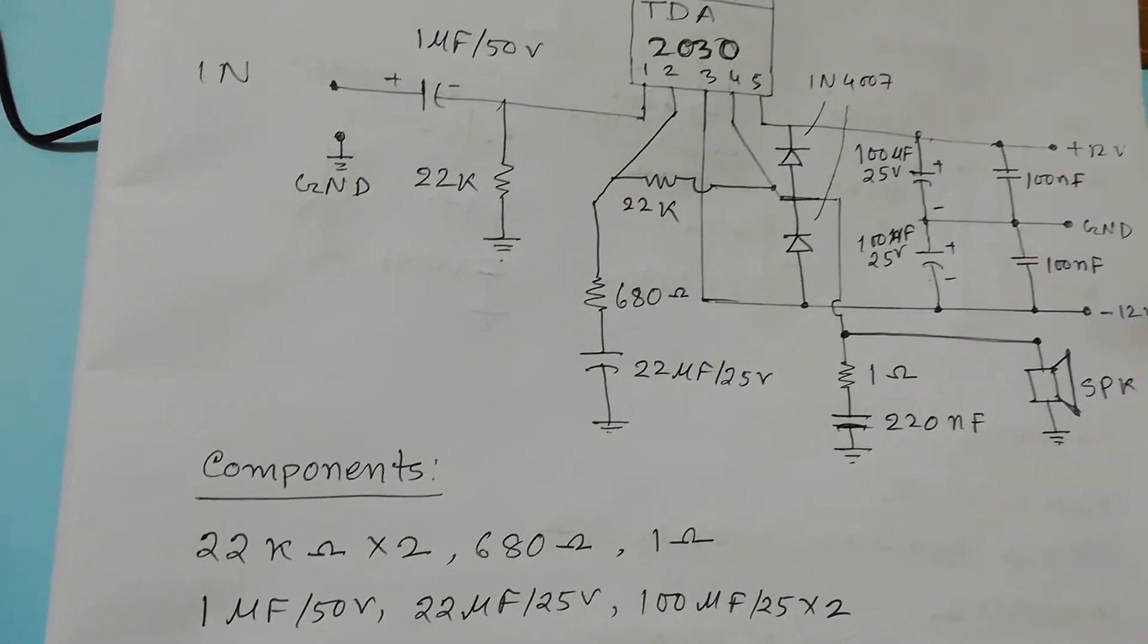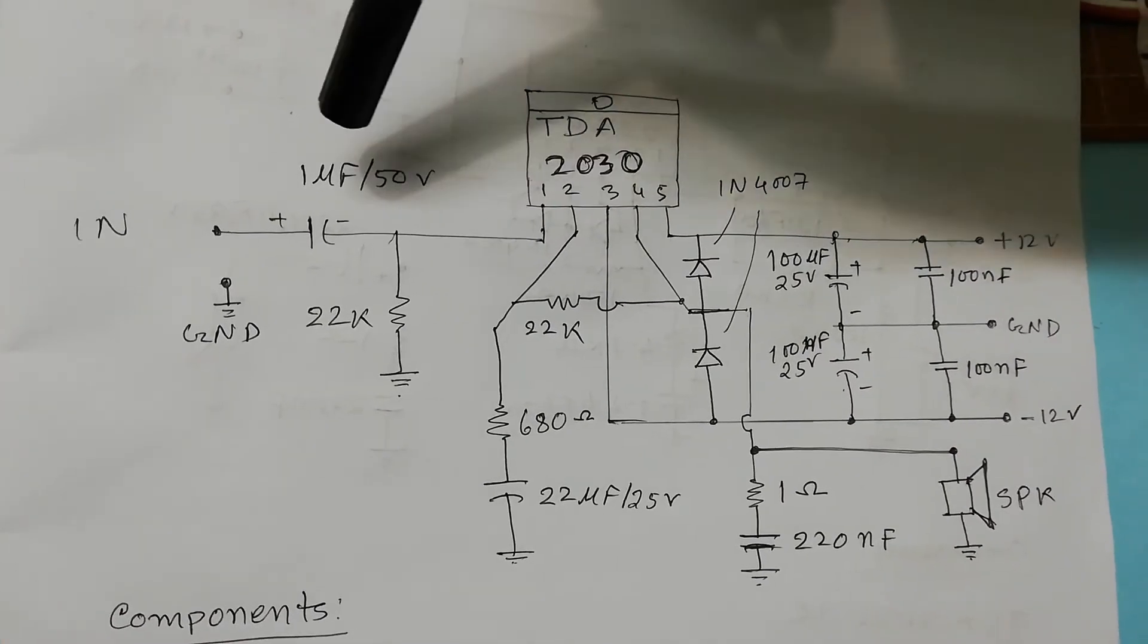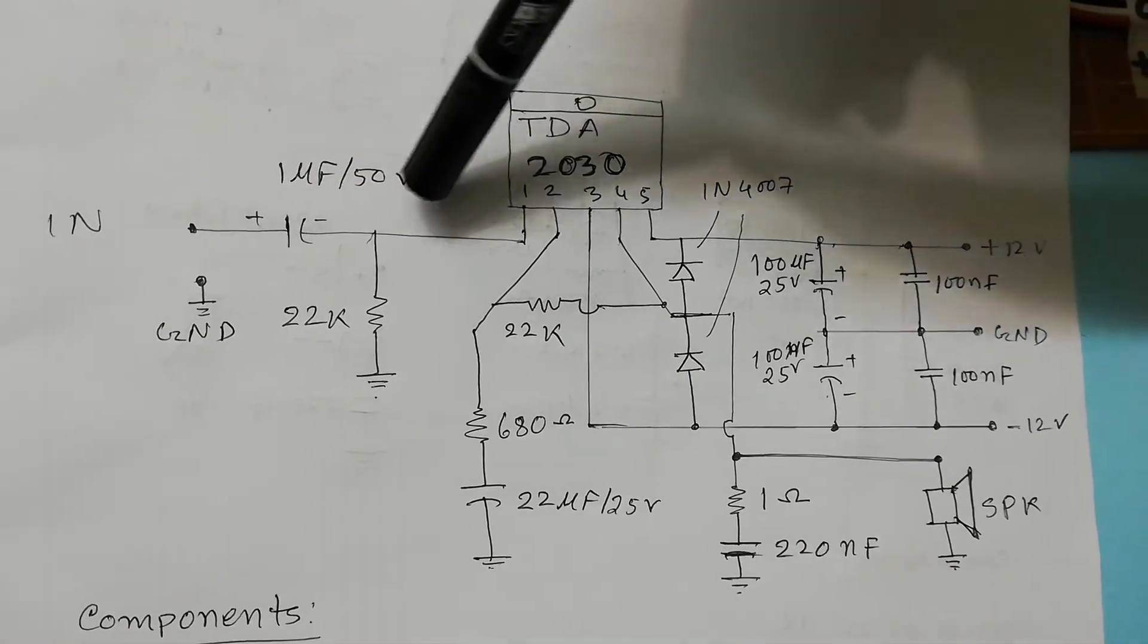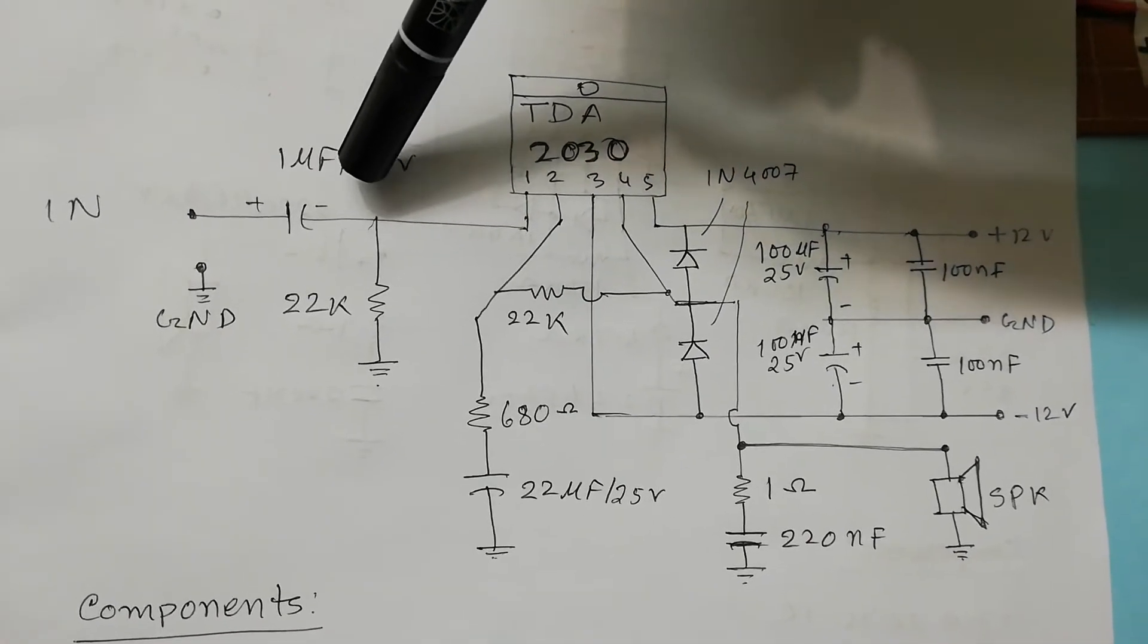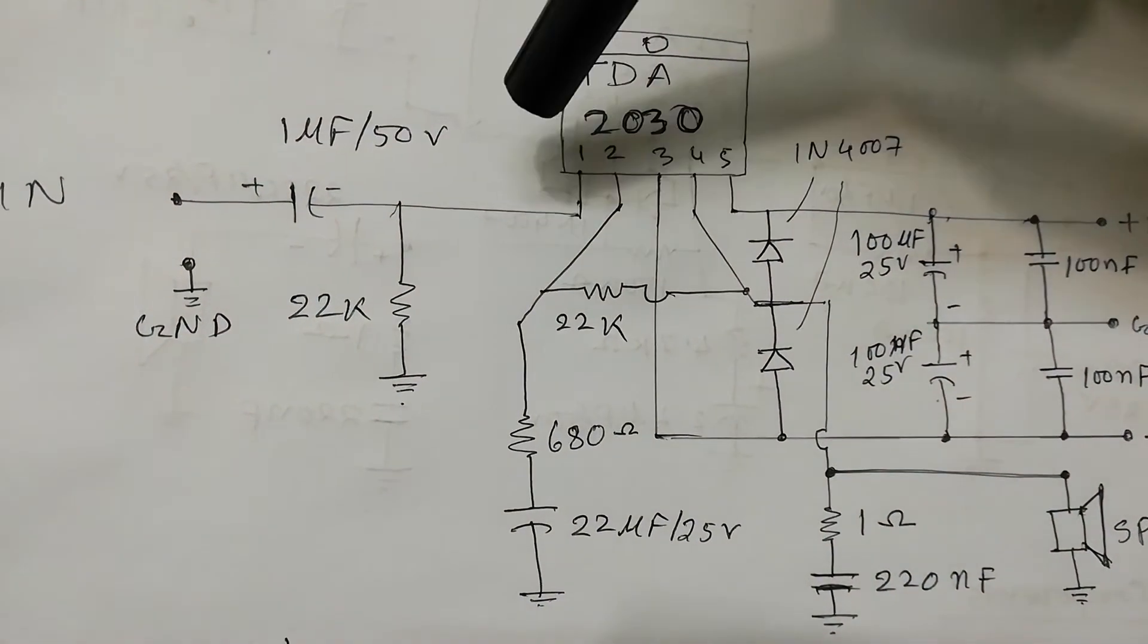And if I look at the circuit diagram, in pin number one I connected one capacitor, one microfarad 50V. And from pin number one, I grounded through 22K resistor. This is the non-inverting input.